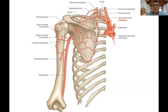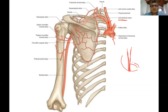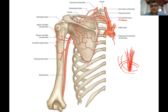The subclavian artery is in the root of the neck and is divided into three parts, which you will learn when you study the neck. The division is based on its relationship to the scalenus anterior muscle. If you have the first rib here, the subclavian artery comes out behind the scalenus anterior - just like the axillary artery going behind pectoralis minor. The part behind the muscle is the second part.